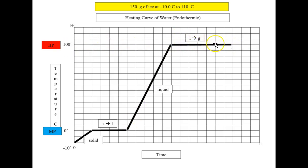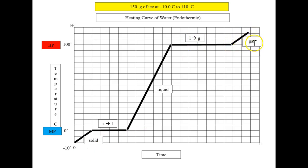The boiling point is represented by the horizontal line at 100 degrees. It is not to scale — if it were, the boiling point line would extend actually six times farther than the melting point line. Liquid is turning to gas here; they exist simultaneously. Finally, we see the temperature increasing again from 100 up to 110 degrees, which is the gas phase.